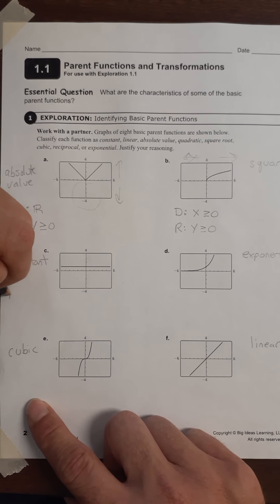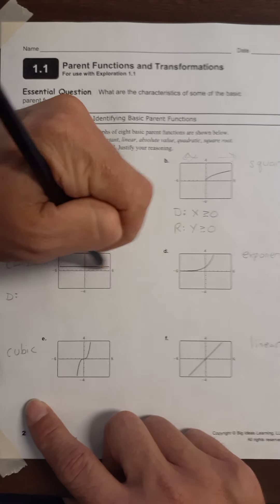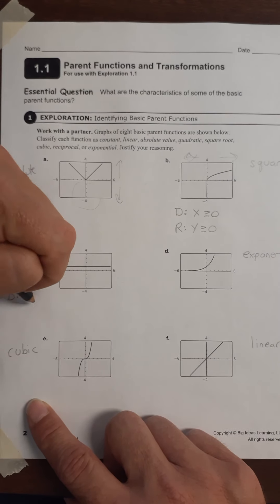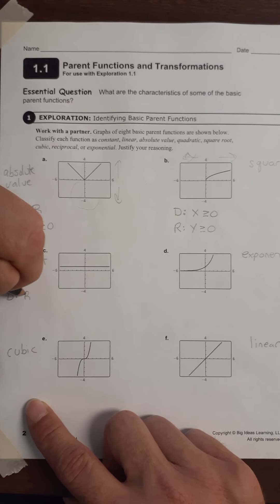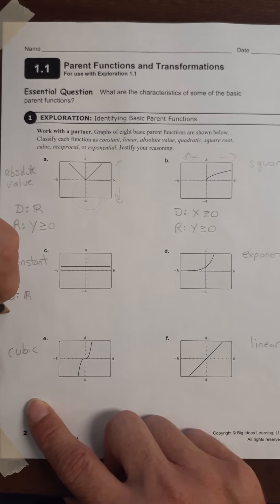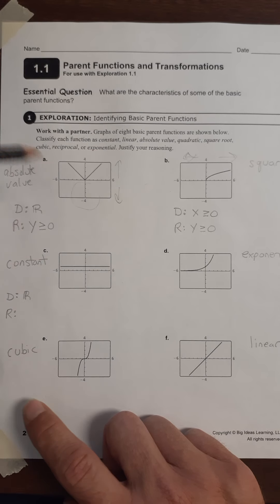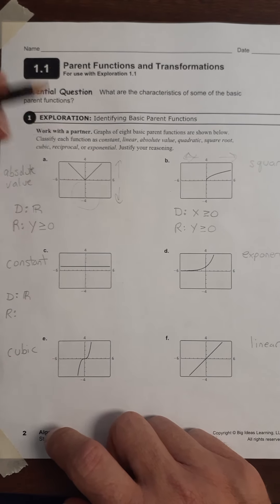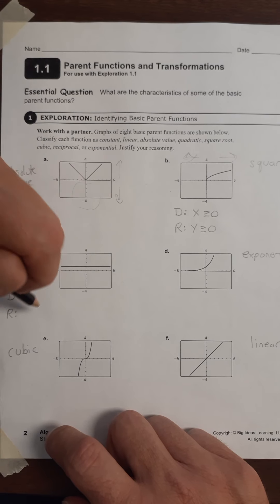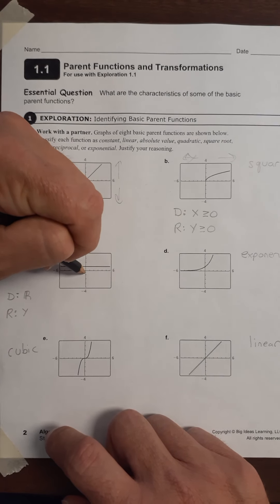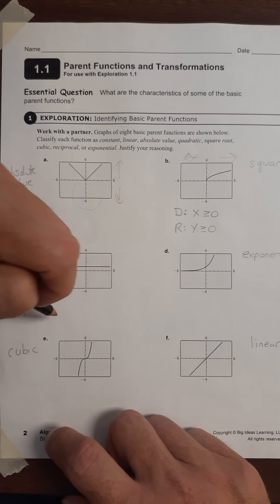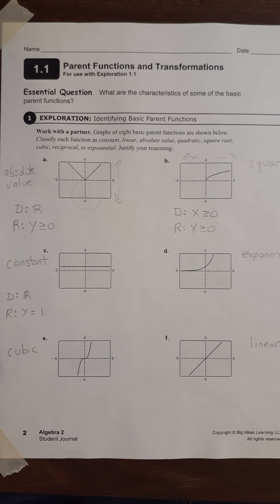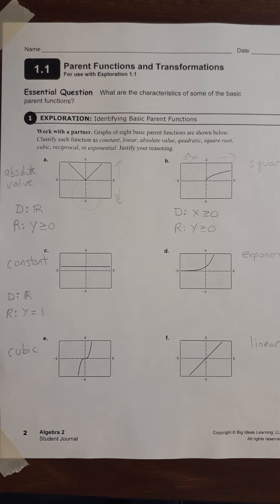On to the constant. For the domain: does it go to the right forever? Yes. Does it go to the left forever? Yes. The domain is all real numbers. And for the range, it doesn't go up forever and it doesn't go down forever — the only time you can find it is when y is at one. So y equals one is the only place you can find it when you look up and down.